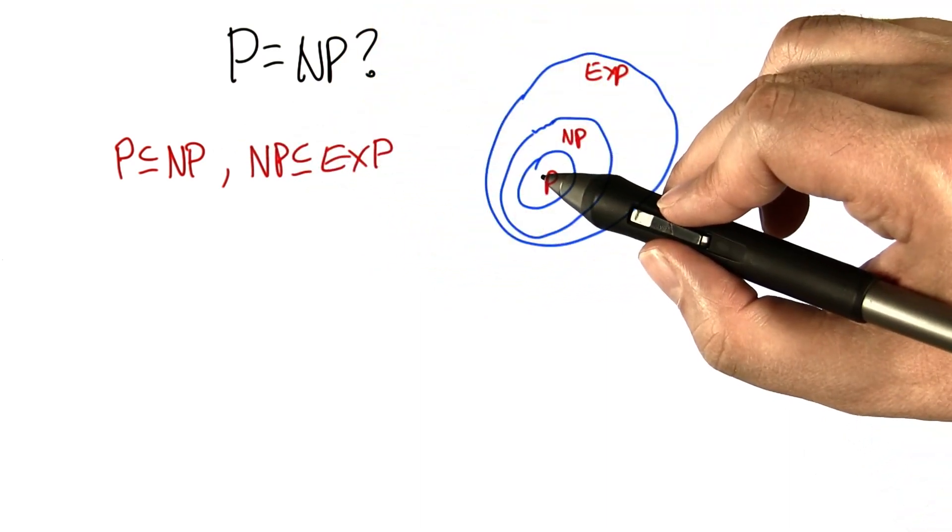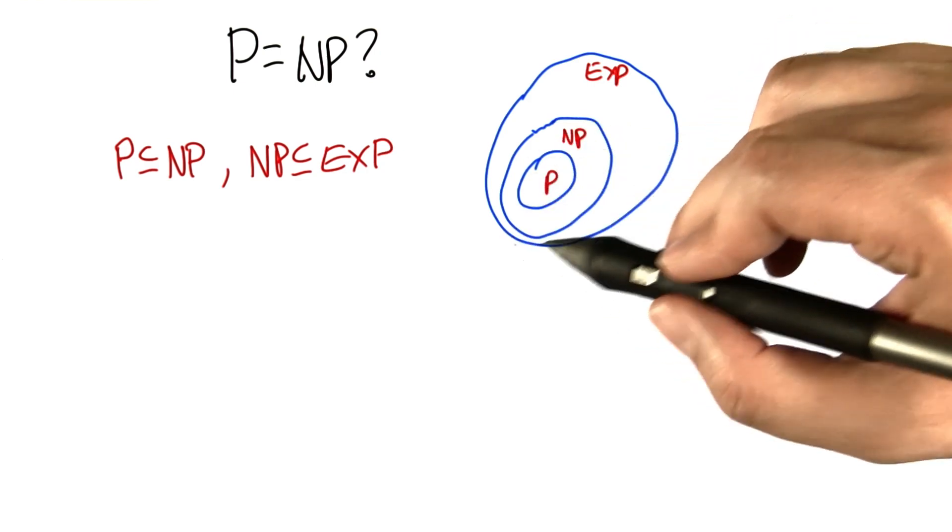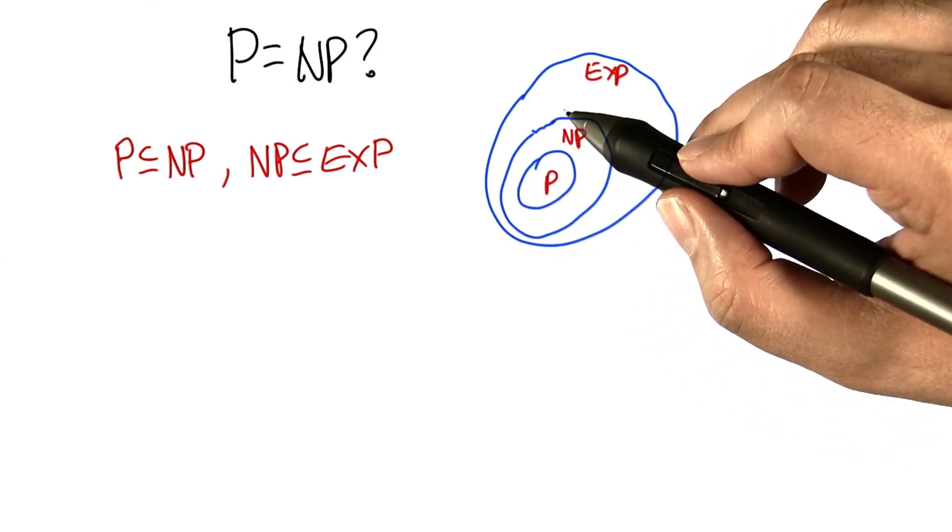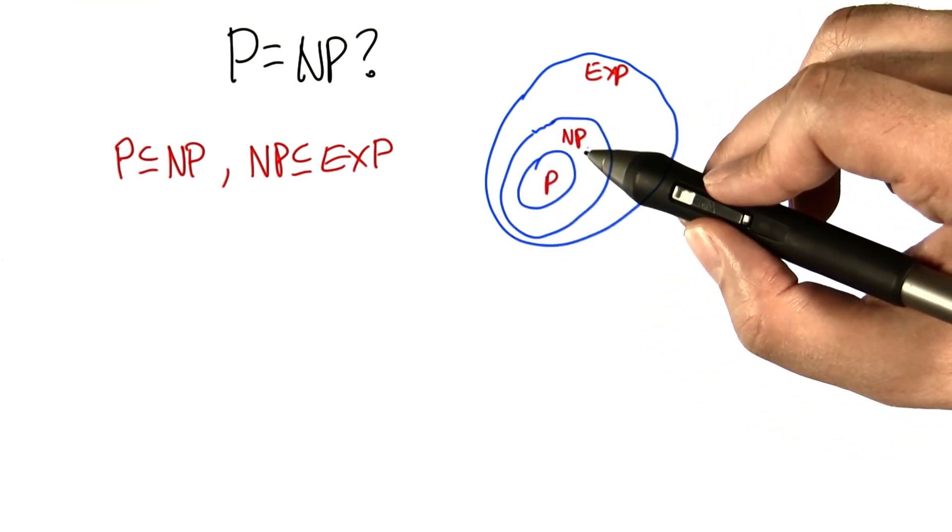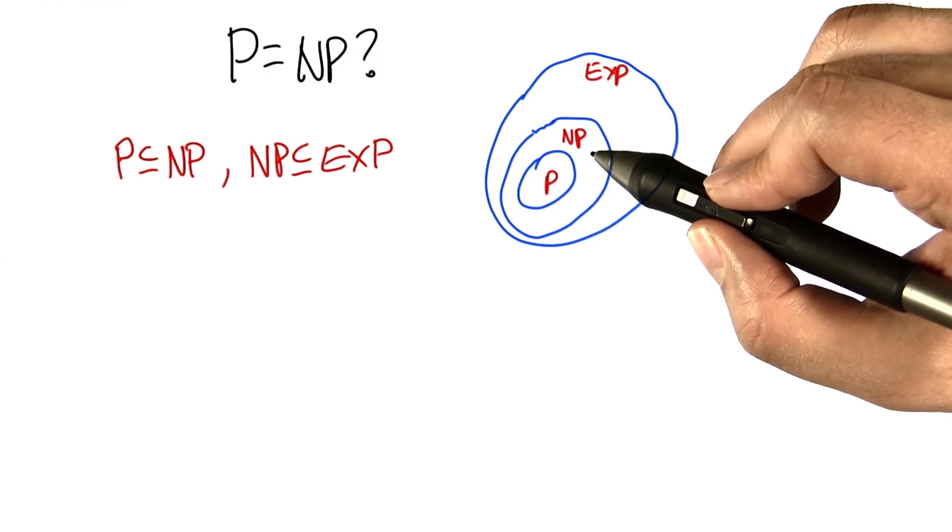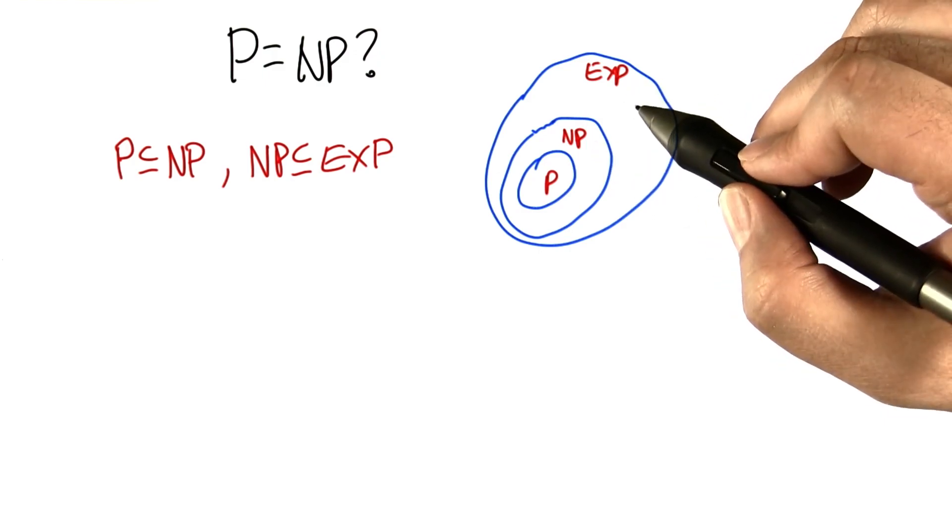That is to say, any problem that you can solve in polynomial time, we can certainly solve in non-deterministic polynomial time, and any problem that we can solve in non-deterministic polynomial time, we can also solve in exponential time.